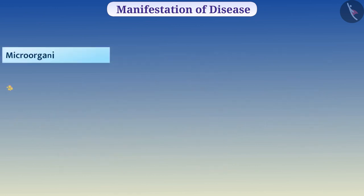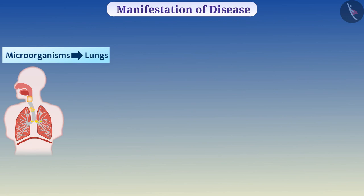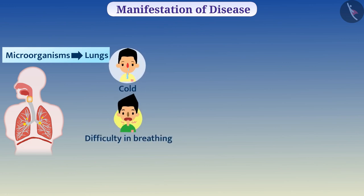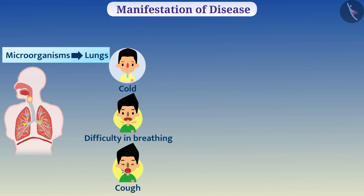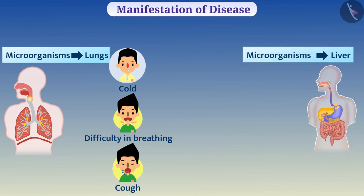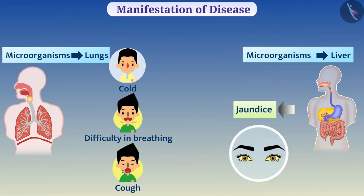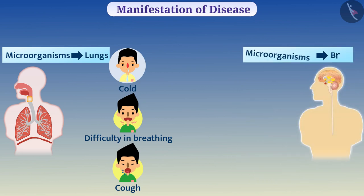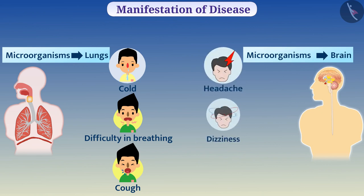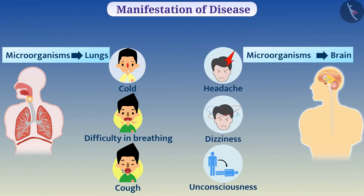If microorganisms live in the lungs — i.e., if the lungs are the target — then the symptoms will be cold, difficulty in breathing, cough, etc. Similarly, if the liver is the target, then the symptom will be jaundice. When the target is the brain, the symptoms will be headache, dizziness, and unconsciousness.